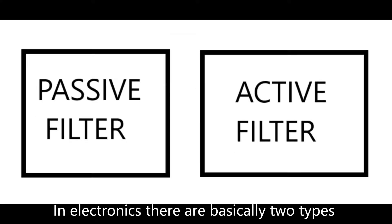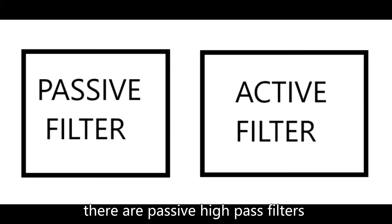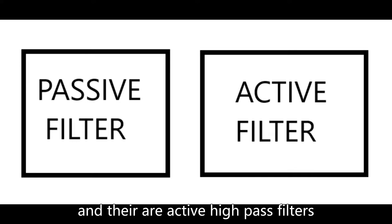In electronics, there are basically two types of high pass filters. There are passive high pass filters and there are active high pass filters.